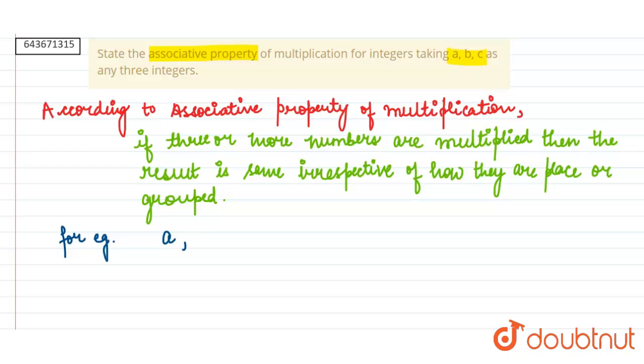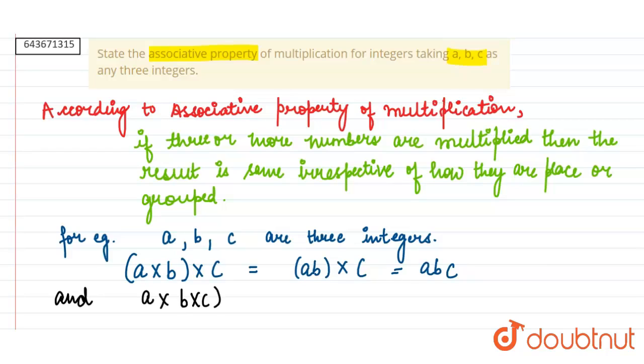For example, let a, b, c be the three integers here. a into b whole bracket into c is equals to ab whole bracket into c which becomes abc. And a into b into whole bracket bc becomes a into whole bracket bc which becomes again abc.